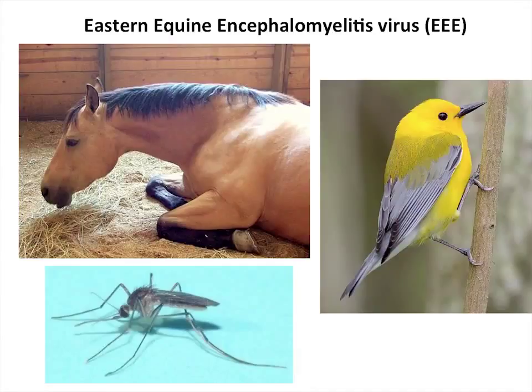This mosquito, Culiseta melanura, transmits the virus between birds; occasionally it spills out into horses and humans and causes a severe necrotizing encephalitis. It's a very nasty virus. That was the system I was working on when I was at the University of Maryland, and about four or five years in, I thought I really wanted to get involved in something with a bigger public health impact.